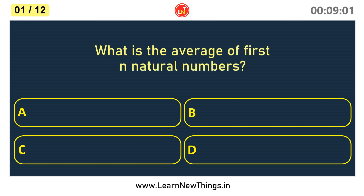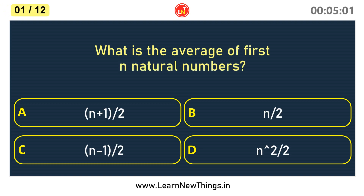What is the average of first n natural numbers? The answer is (n+1) / 2.